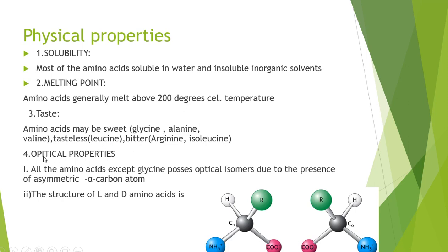Then coming to optical property that we already discussed about the L isomer and D isomer. Once again I'm repeating, all the amino acids except glycine, why? Because glycine possesses H instead of R, so that's why glycine is a symmetric amino acid.